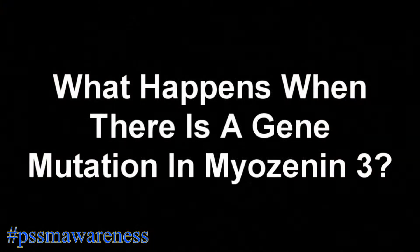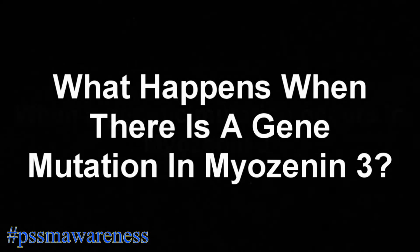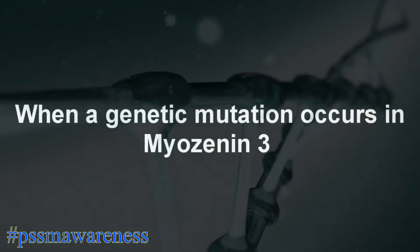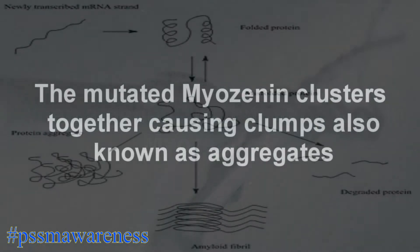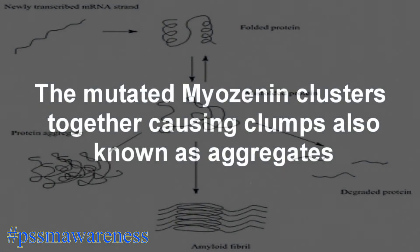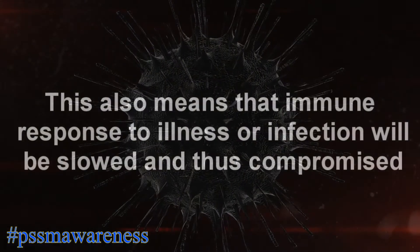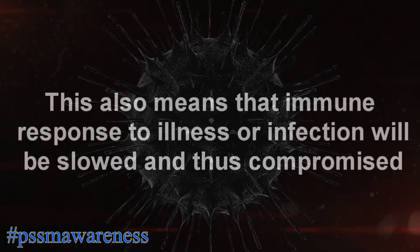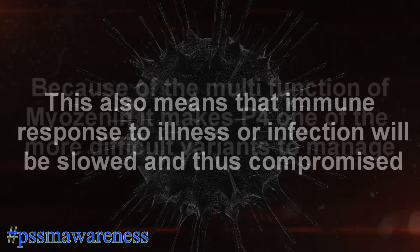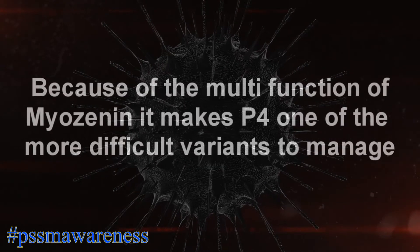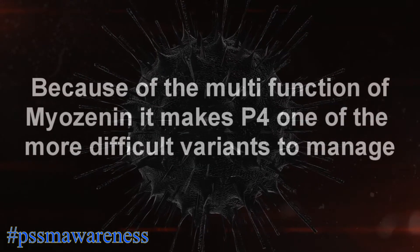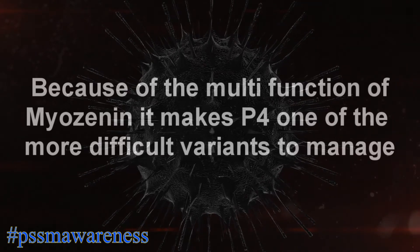What happens when there is a gene mutation in myozenin-3? When a genetic mutation occurs in myozenin-3, the mutated myozenin clusters together, causing clumps, also known as aggregates. These clumps prevent the proteins in muscles from functioning normally. Because myozenin also plays a role in calcineurin signaling, this also means that immune response to illness or infection will be slowed and thus compromised. Because of the multi-function of myozenin, it makes P4 one of the more difficult variants to manage.